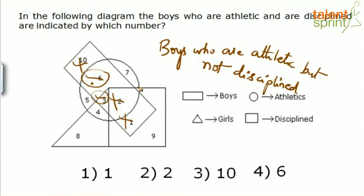Note: strictly speaking, the question has a minor issue — triangle shows girls and rectangle shows boys, so there should not be any overlapping between them, yet region 3 appears to overlap both, implying those boys are also girls, which is not correct. However, this is a previous year exam question. With respect to what is asked, boys who are athletic and disciplined is shown by 2, and boys who are athletic but not disciplined is shown by 6 and 3. Focus on what is required and keep eliminating until you reach the correct answer.